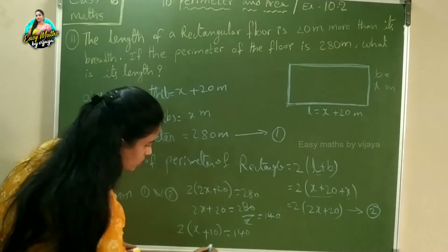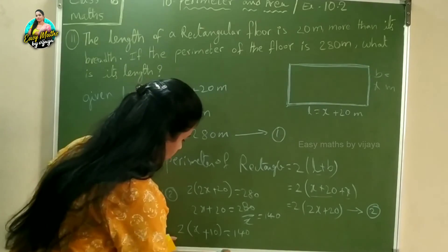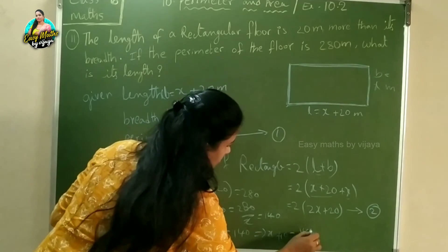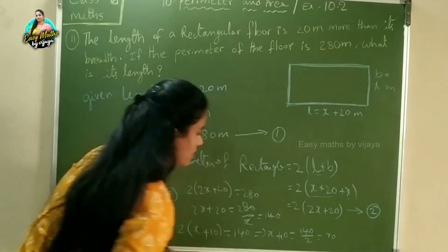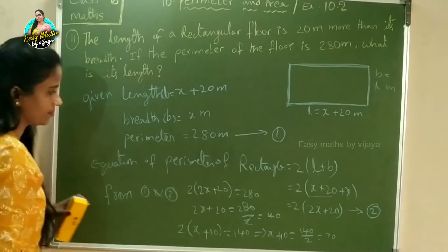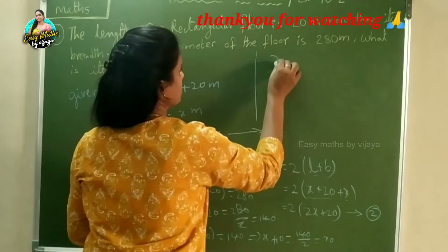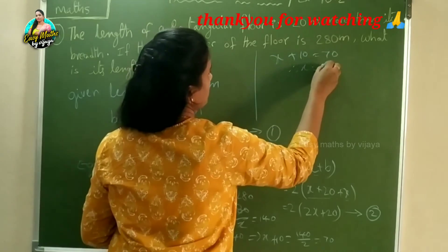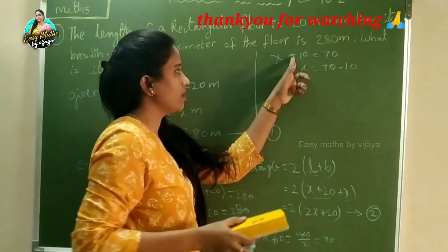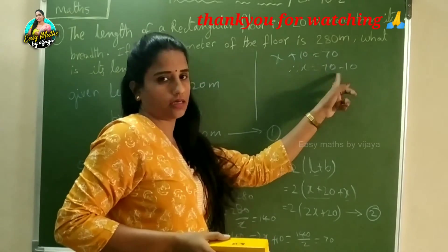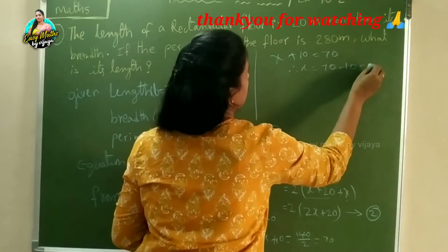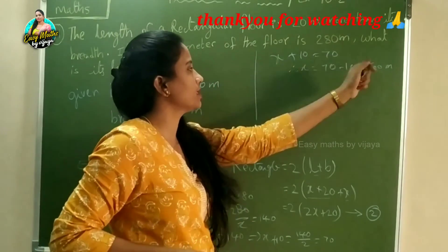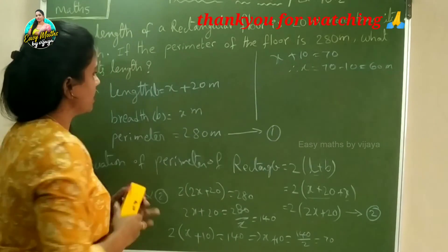So x + 10 = 140 ÷ 2 = 70. Therefore x + 10 = 70, which gives x = 70 − 10 = 60 meters. So x = 60 meters, which means the breadth of the rectangle is 60 meters.